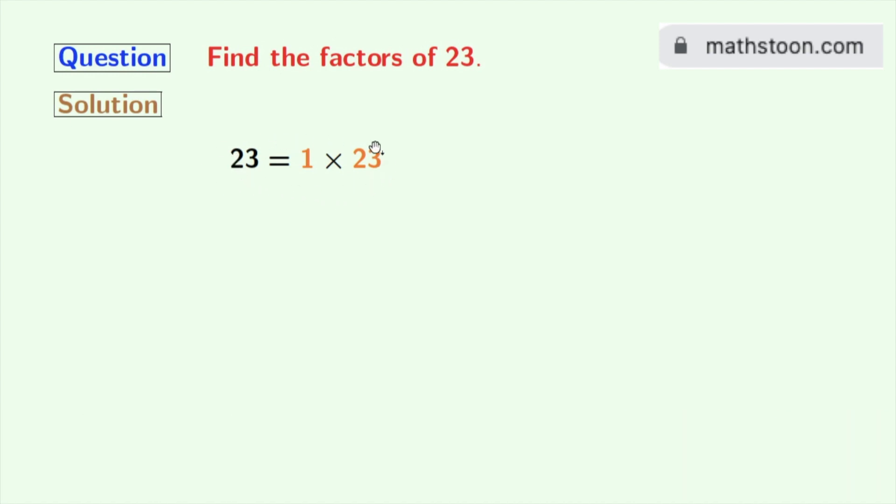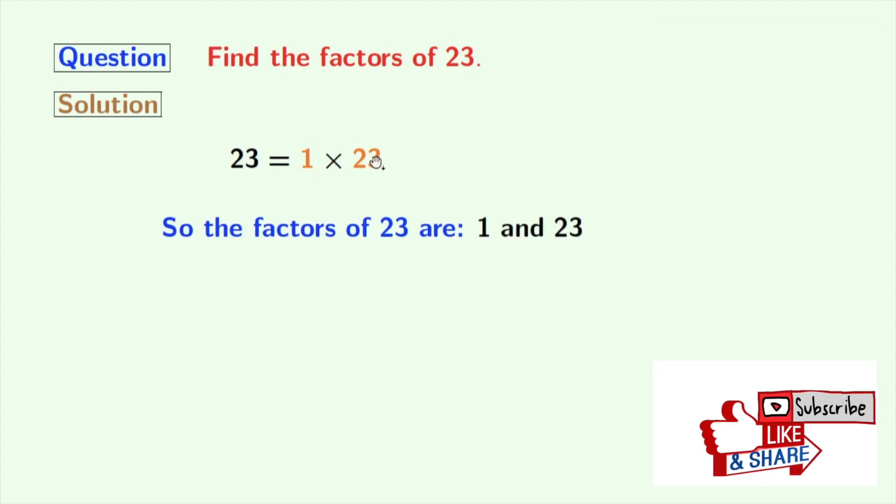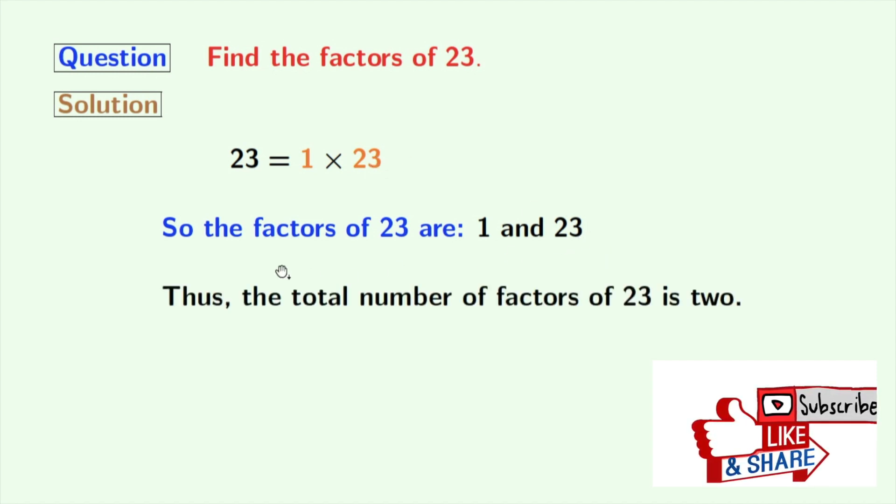So the factors of 23 are 1 and 23. See that the total number of factors of 23 is 2. Now if we look at these factors, we can see that only 23 here is a prime number.